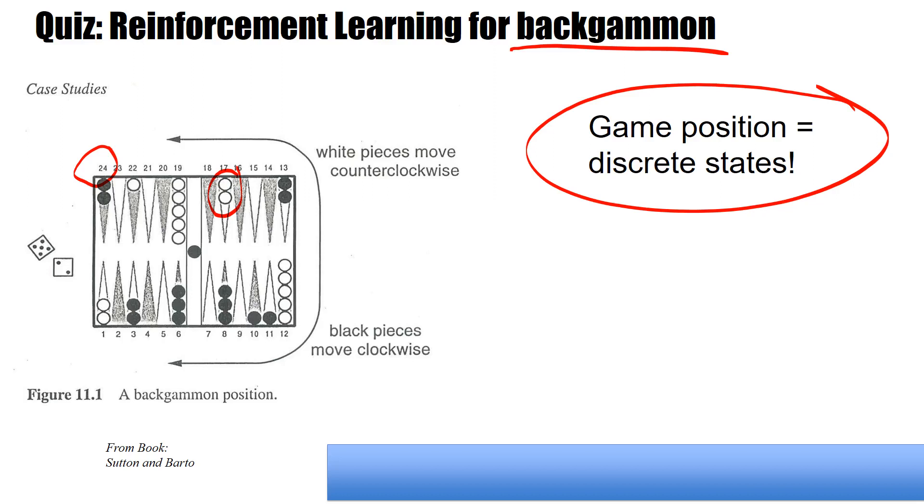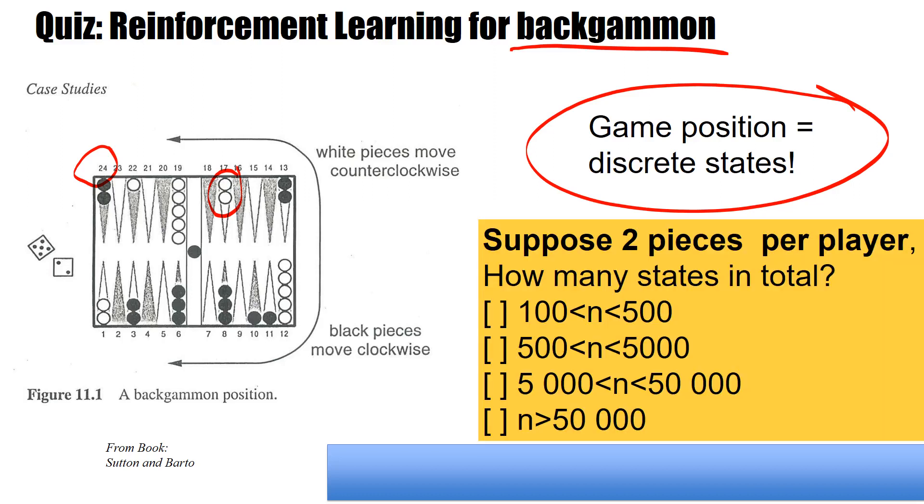And now I ask the question of how many discrete states do we have? And to make it simple, we don't play with 15, but just with two pieces per player, 24 fields on the board.